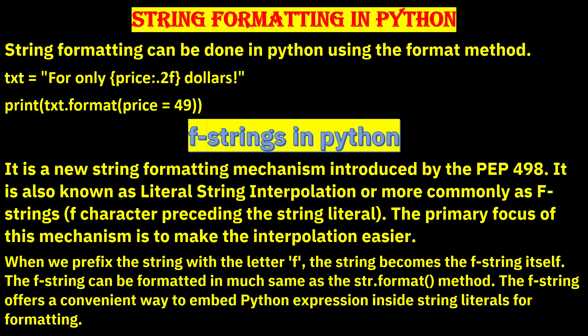F-strings in Python are a new string formatting mechanism introduced by PEP 498, also known as literal string interpolation. The f character precedes the string literal. When we prefix a string with the letter f, it becomes an f-string, which can be formatted much the same as the str.format() method, offering a convenient way to embed Python expressions inside string literals.